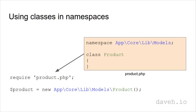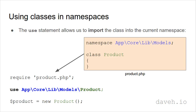What about using classes in namespaces when you have a very long namespace? If you're using this class, it can look quite messy to have to write out the whole namespace when creating an object of that class. By using the use statement, we can bring that class into the current namespace, so we can create a new object without writing the whole namespace.